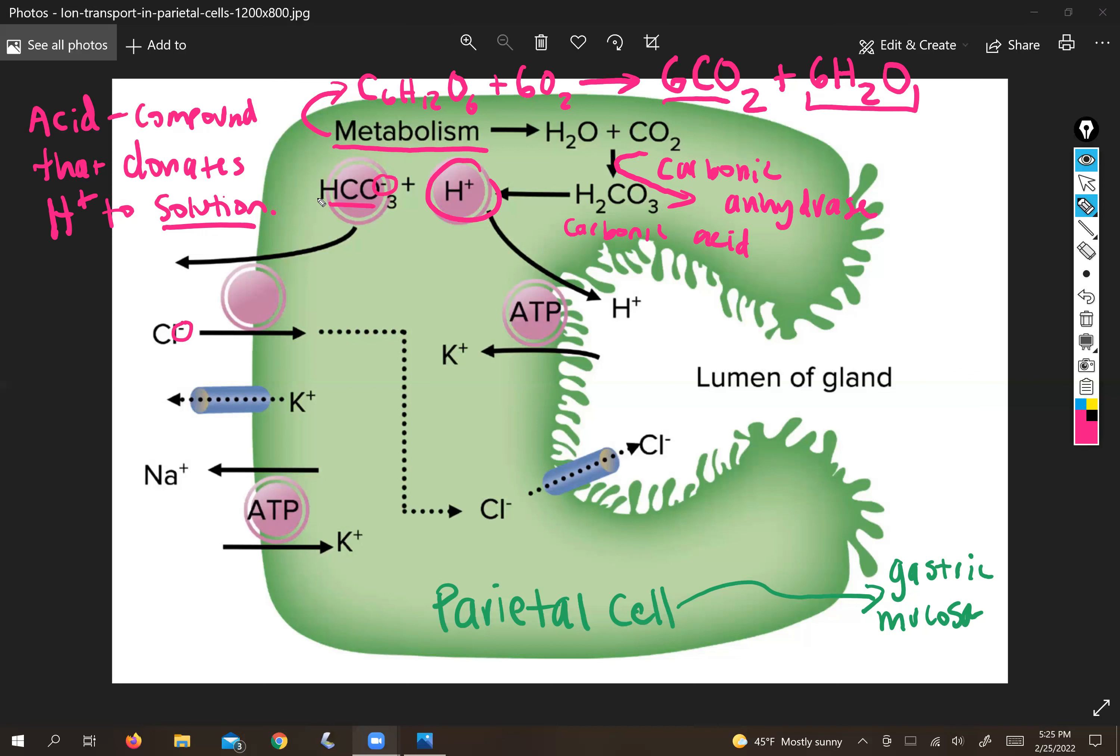And cells like to be more electronegative on the inside than they do on the outside. So if we're going to be kicking something that's an anion out, we need to gather something else in.